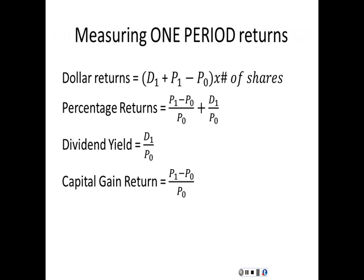Our return comes from two sources. The dollar return on our investment is the gain in price plus the dividend, scaled by the number of shares owned. For a percentage return, we have two components: the capital gain yield, which is the change in market value divided by the price we paid, and the dividend yield, which is D-one — the future dividend — divided by the current price. Those two components add up to the total return.